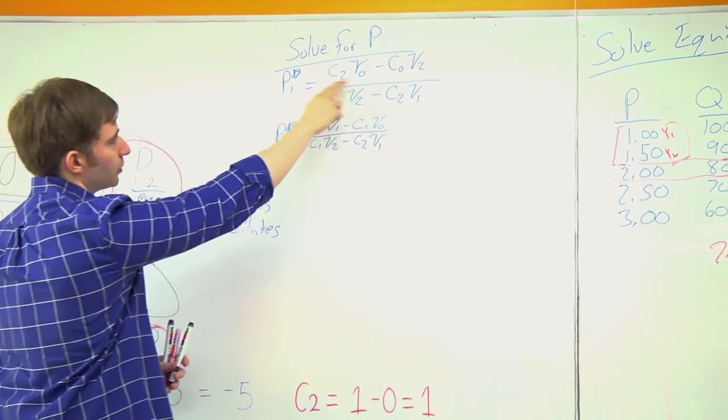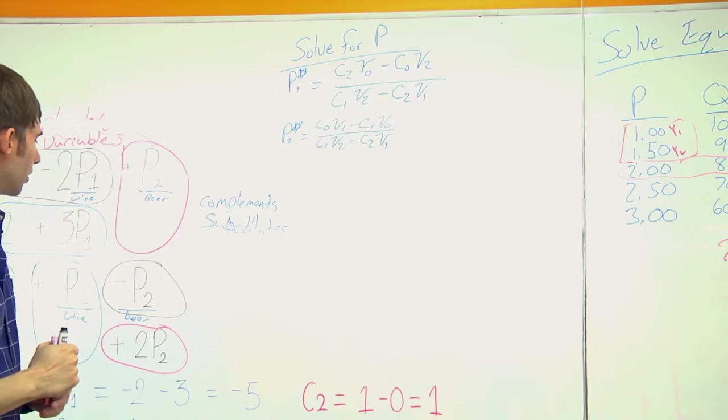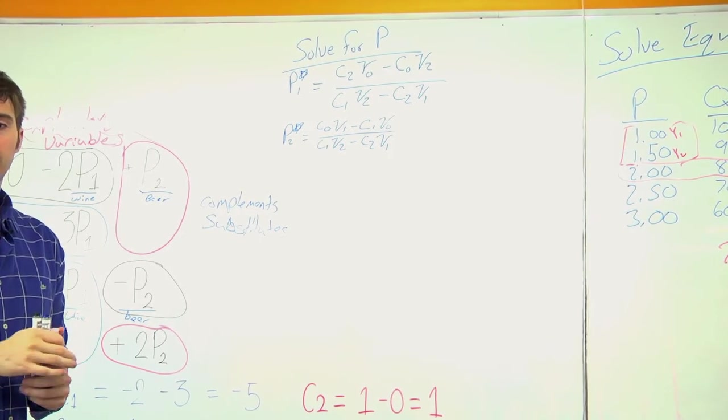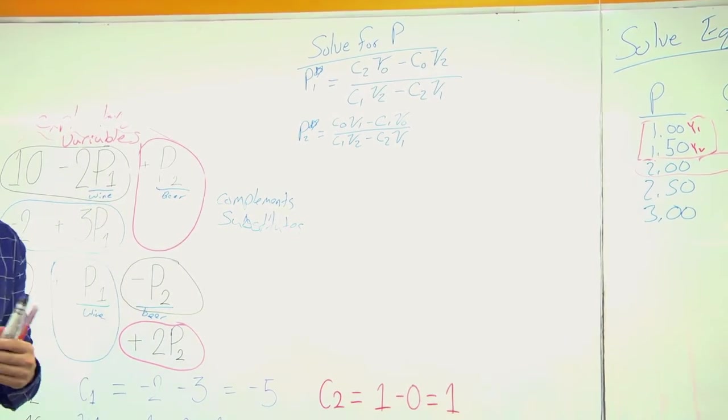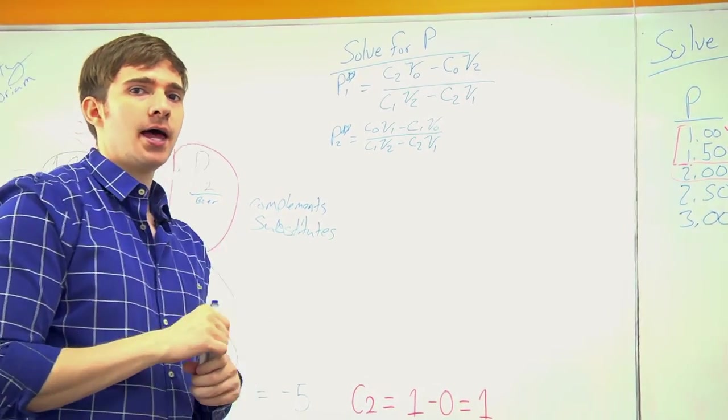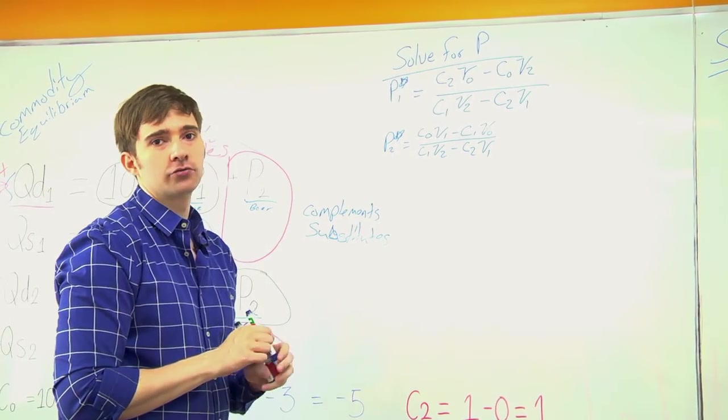So these are the equations we would use. We would just plug them in and solve. Once we have P star, we're then going to be able to plug that in and solve for Q, back into our original equation. So go ahead and pause the video now. And when we come back, you'll have the answer. But try and solve first by yourself.